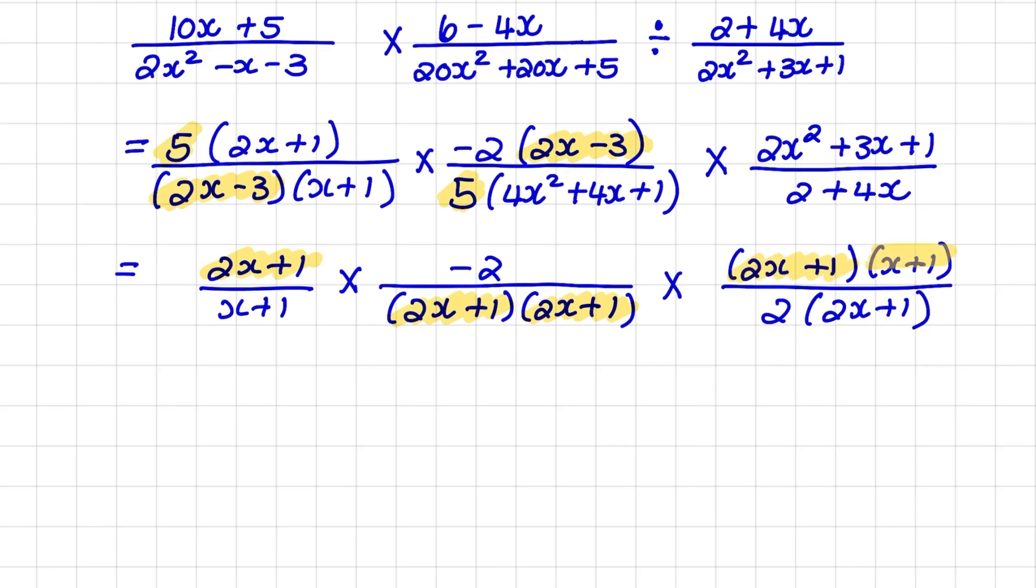Also, x plus 1 in the third fraction will cancel out x plus 1 in the first fraction. So when I simplify, I have negative 2 over 2 times 2x plus 1. And negative 2 divided by 2 would lead to negative 1 over 2x plus 1. And that is my final answer.